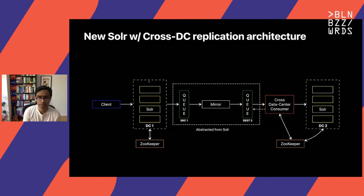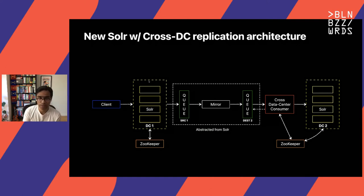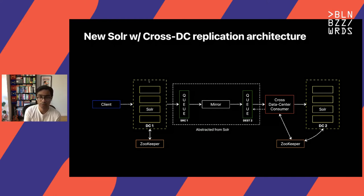Source one and dest two are basically topics in this case. I'm going to use terminology common for Kafka because the implementation out of the box would use Kafka to begin with. So Solr writes this to a source topic — let's call it source one, because it belongs to data center one. There's a mirror of some sort that mirrors this into a queue called dest two, the destination queue for data center two. There's a cross data center consumer responsible for consuming everything coming into its local destination queue and writing it to Solr. The isolation of responsibility, as Solr is not expected to be the queue, takes away a lot of problems that Solr might have had with a CDCR solution.